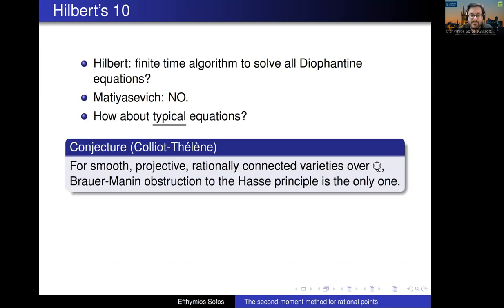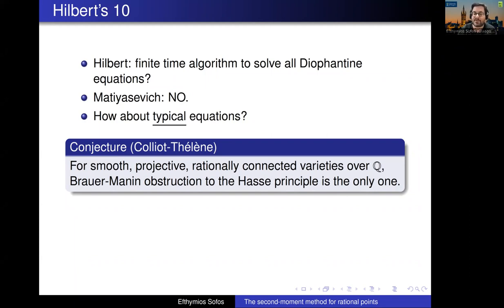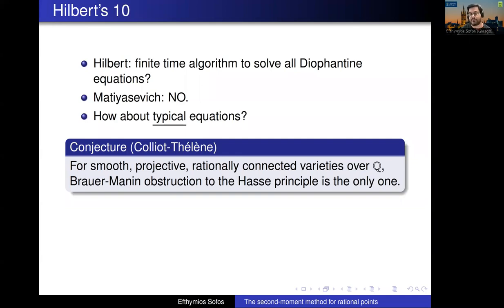Here is one of the very central conjectures in my area, by Colliot-Thélène. It says: if you give me some equation defining some variety over the rationals, and the geometry is simply connected — professionally we say smooth projective and rationally connected — then there should be a finite time algorithm. Why? There is the Brauer group, a finite group you can calculate for every Diophantine equation. By looking at whether this group is trivial or not, you can decide if the Hasse principle holds — and the Hasse principle is also a finite time algorithm, since for a smooth equation you only need to check solubility at a finite list of primes, using Hensel's lifting.